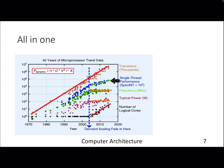Looking at 50 years of microarchitecture trends from 1970 to 2020: transistor counts are now roughly constant in terms of growth rate; single-thread performance reflects the ILP wall and memory wall and is not going up; frequency is remaining constant; power is also constant. The number of cores, however, has gone up significantly in the last 10 years.